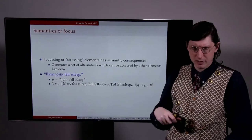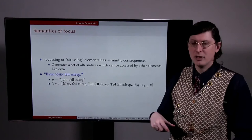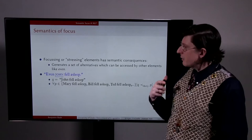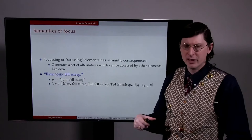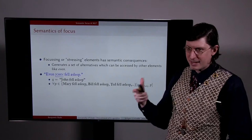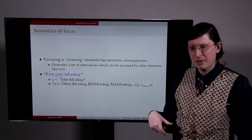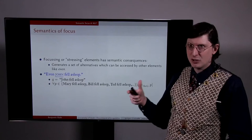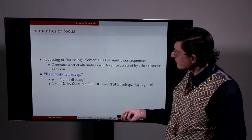In a sentence like 'even John fell asleep'—notice the special prosody on John—this asserts that it's true that John fell asleep. But it involves this other meaning component, this presupposition that if you look at alternatives to John, other salient people like Mary, Bill, Ted, whoever they might be, that the likelihood of John falling asleep is less than that of the likelihood of alternatives to John falling asleep. So John fell asleep, and this is unexpected because John is less likely than all of these other people to fall asleep, but yet he fell asleep.